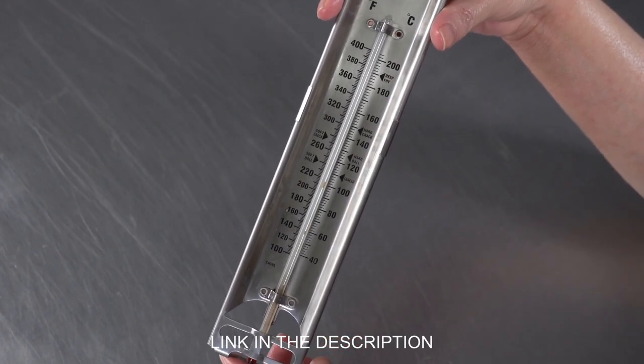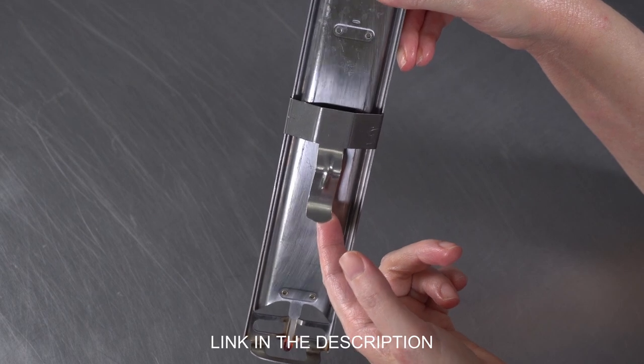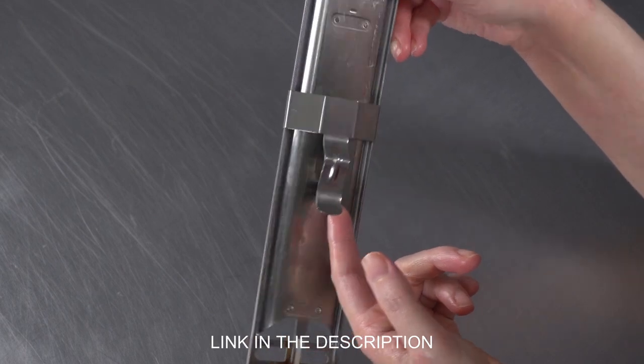They're meant to be hooked on the side of your pots and pans. So they usually have this nice little handy doodad back here, this little clip.